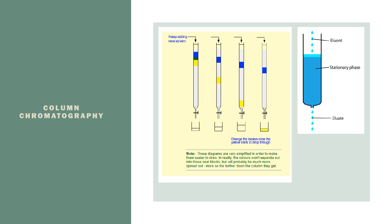The last type of chromatography is called column chromatography. This one is unique because it actually allows you to collect the substances in the mixture instead of just observing or analyzing them. You have a column — typically a burette or large test tube with openings on both ends — and you pack it with what's called the stationary phase, sometimes a silica gel or another solid material.